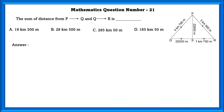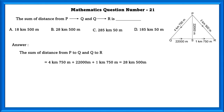From P to Q it is 4 kilometers 750 meters and from Q to R it is 22,000 meters plus 1 kilometer 750 meters. Adding all of these we get the sum of distances from P to Q and then Q to R, that is 28 kilometers 500 meters.